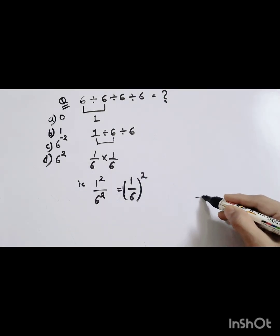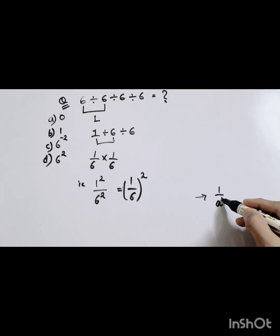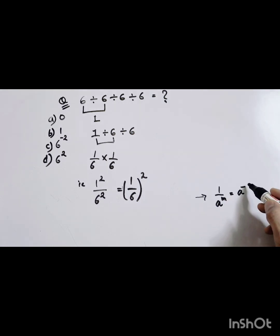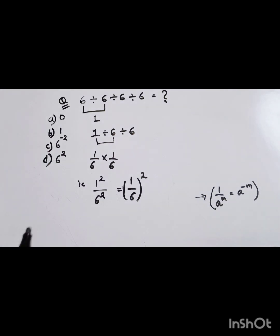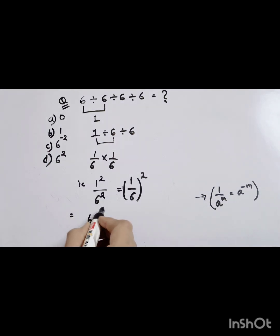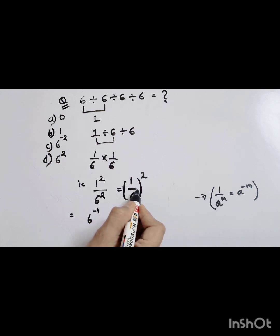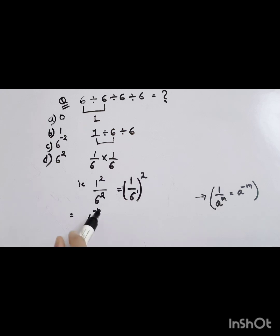Now I will apply the law in reverse: 1 divided by a raised to the power m can be written as a raised to the power minus m. Applying this law, 6 here means the power is 1, so we write it as 6 raised to the power minus 1.